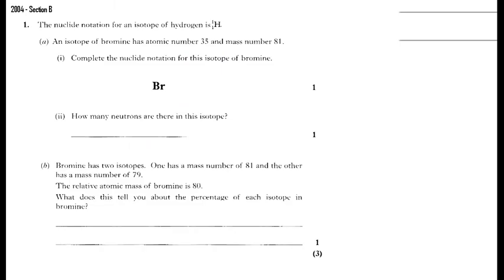Now I'm going to go through an example. This is a 2004 question, question one. The isotope of bromine has the atomic number of thirty-five and the mass number of eighty-one. Complete the nuclide notation for this isotope of bromine.